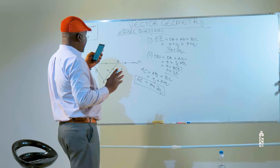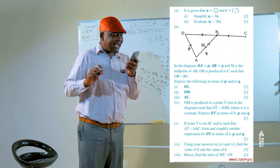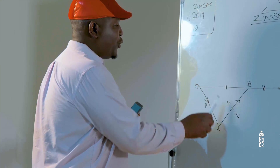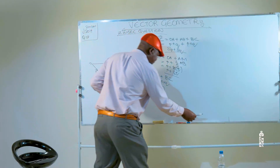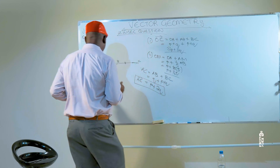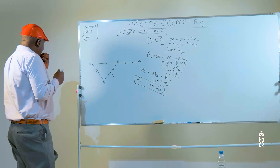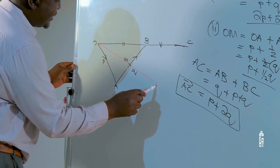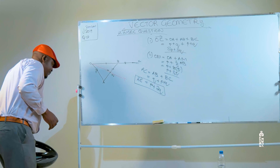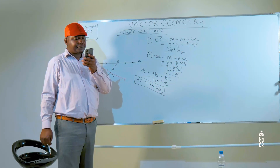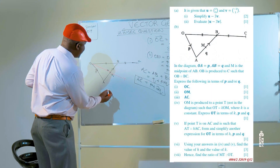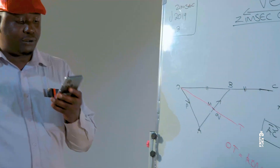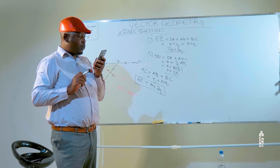Moving on to the next question: OM is produced to a point T such that OT equals K times OM, where K is a constant. Let's jot down this information as it's going to help us in the questions that follow.